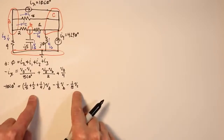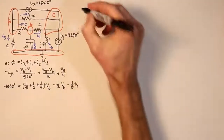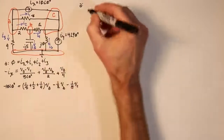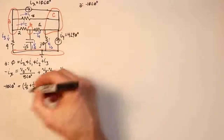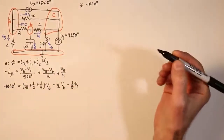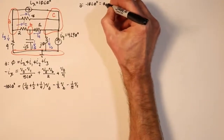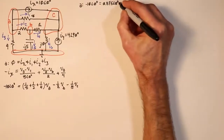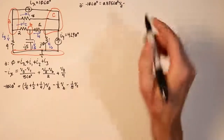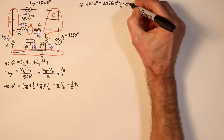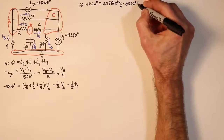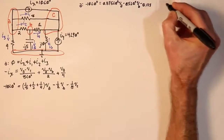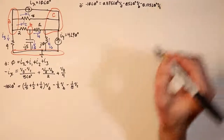We'll simplify and rewrite that. So here's our final equation for VA: negative 10 at an angle of zero equals the coefficient 0.875 at an angle of zero times VA, minus 0.5 at an angle of zero times VB, minus 0.125 times VC.